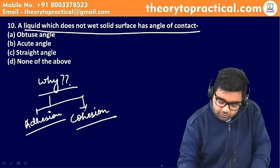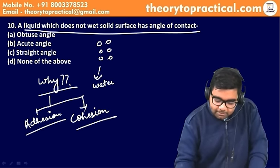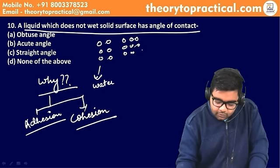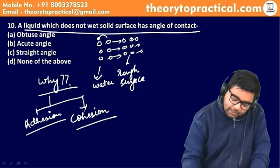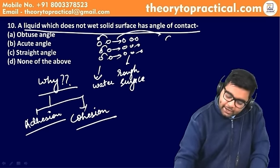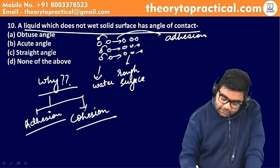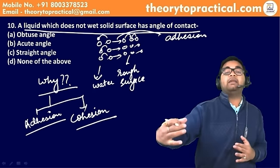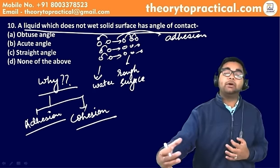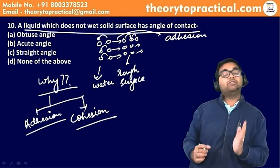Adhesion और cohesion दो important concepts हैं। Adhesion means attraction between foreign/different molecules। Cohesion means attraction between same molecules। Water के लिए adhesion > cohesion होता है, इसलिए water surface को wet करता है। Mercury के लिए cohesion > adhesion होता है — mercury molecules एक-दूसरे को अपनी तरफ attract करते हैं, surface को wet नहीं करते।